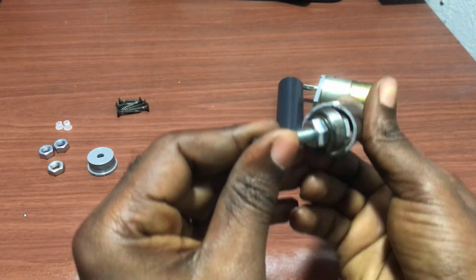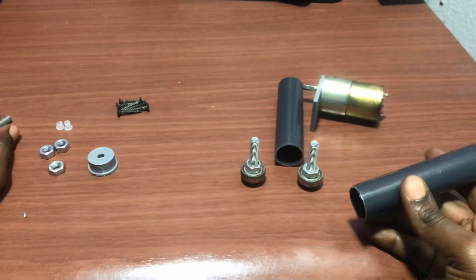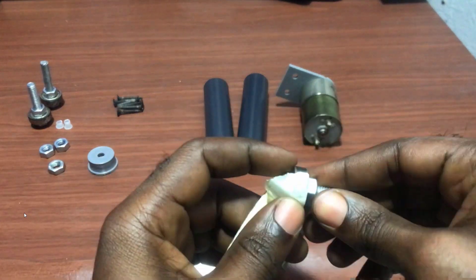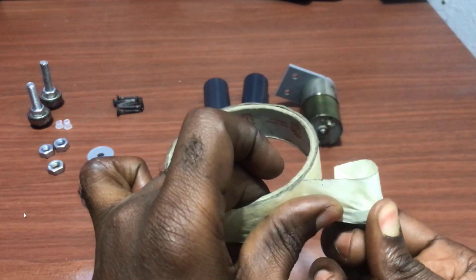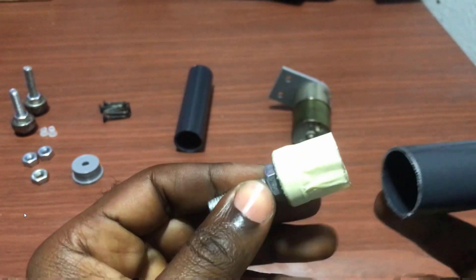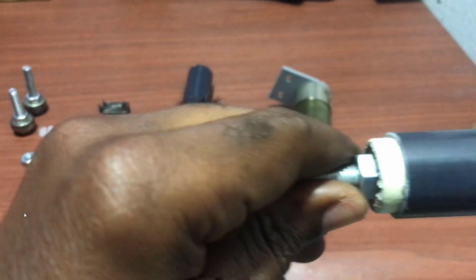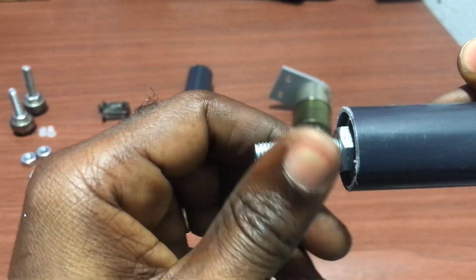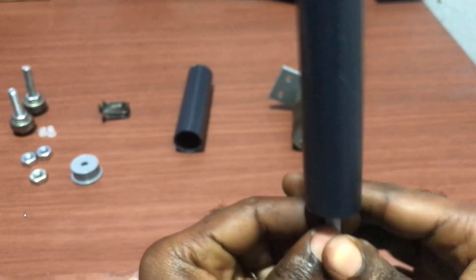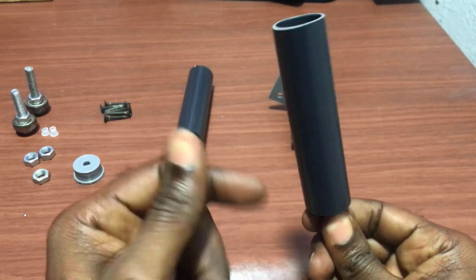Now we get the pipe. We can see that the bearing is a bit loose in the pipe. We need to build it up using masking tape. After that, we need to push it in, and remember you need to leave the bolt a bit out.